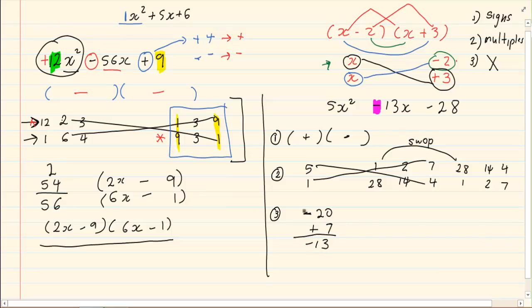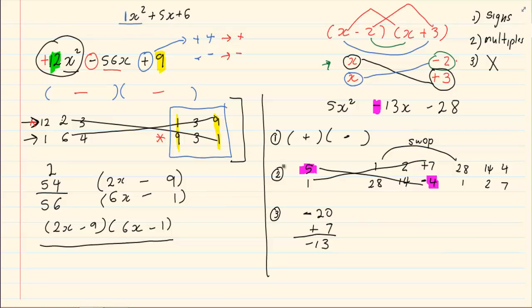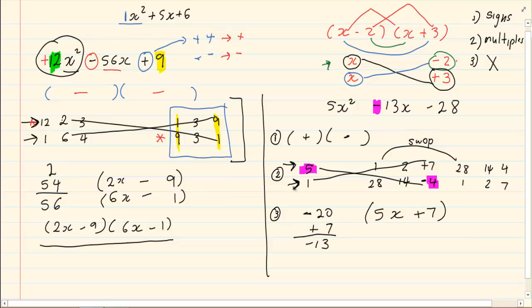That would equal to negative 13. Now, what created the 20? The two numbers that created the 20 was 5 and 4. The signs are going to be placed on the constants on the right hand side. So, we know that the 7 is going to be a positive and the 4 is going to be a negative. How do we write it? This is your first line. So, we've got 5x plus 7 creating your first bracket and your second line is going to create your second bracket. So, we've got 1x minus 4 giving you your answer.